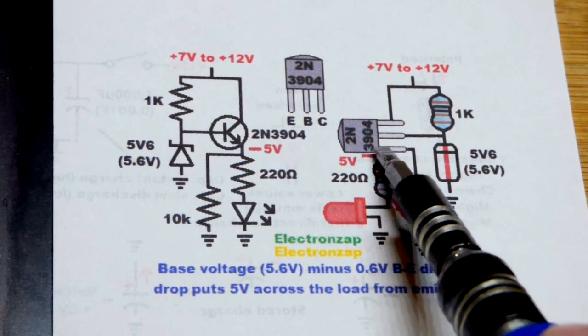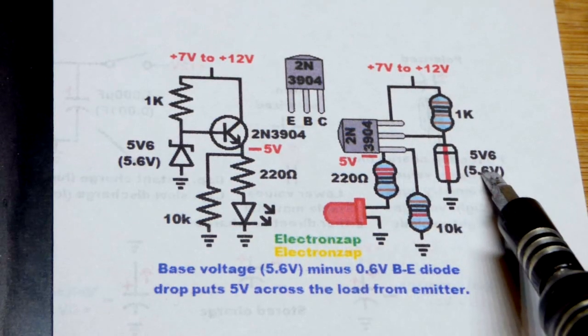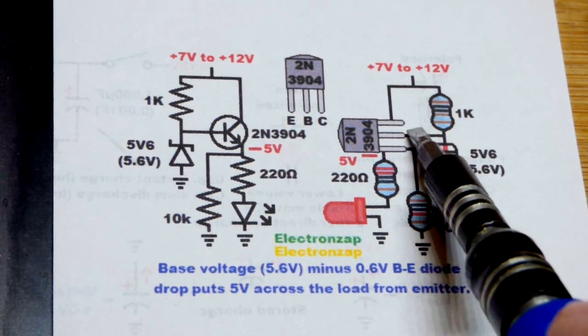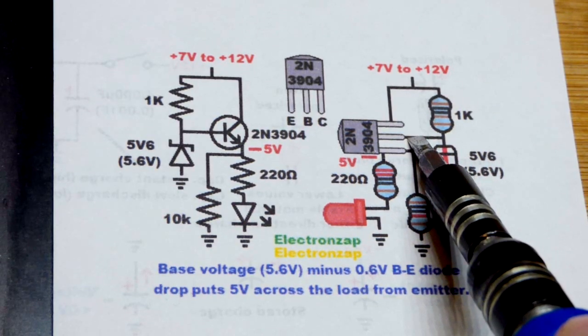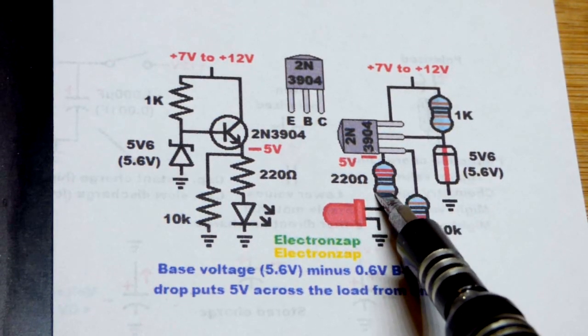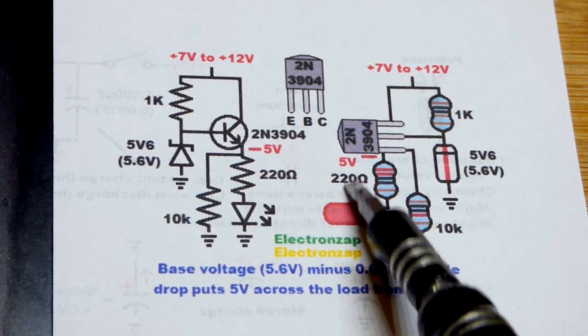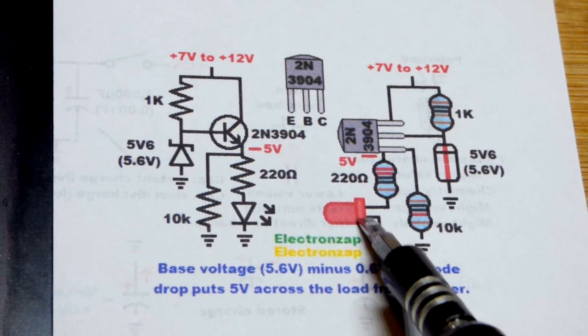But in any case, the voltage transfers, but you lose about 0.6 volts. And so if you're using a 5.6 volt Zener diode to the base, you'll have 5.6 volts there. You lose 0.6 volts, you'll end up with 5 volts right there. So we're going to protect an LED with 220 ohms. That's the bare minimum resistance for 5 volts right there.